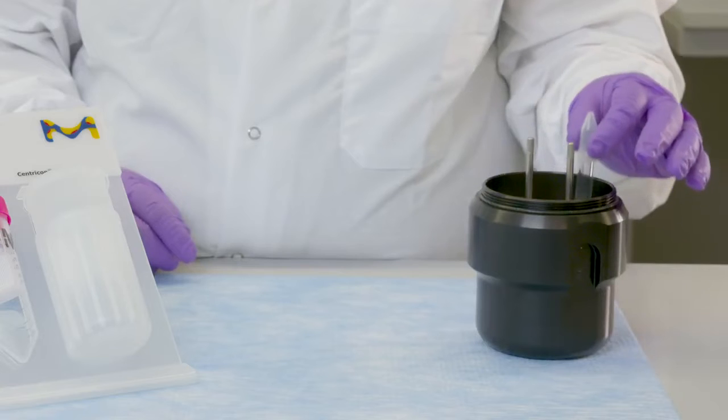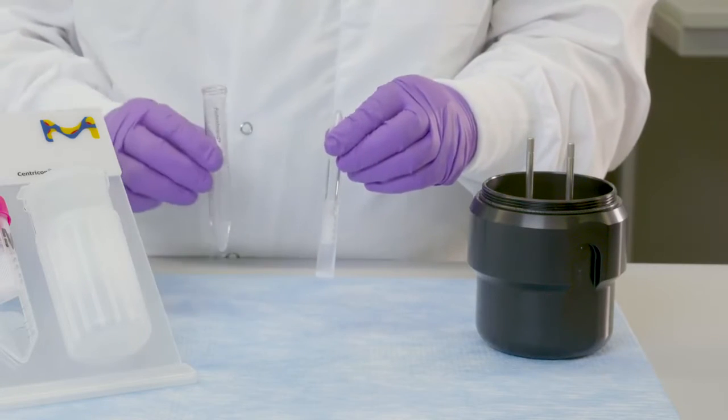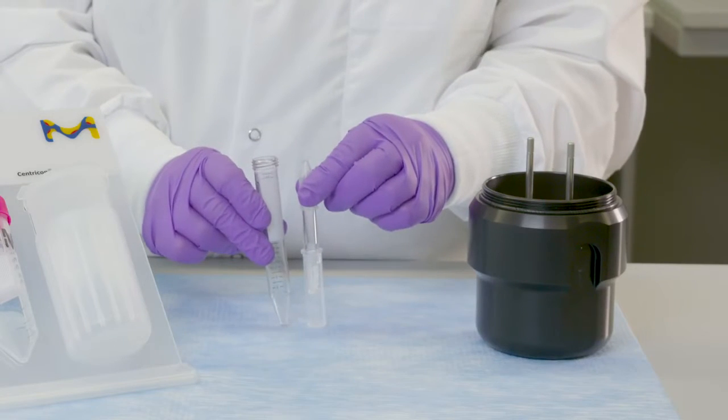This is the same well carrier size as used for the Amicon Ultra 4 devices. The size format is also similar to a standard 15 mil centrifuge tube.